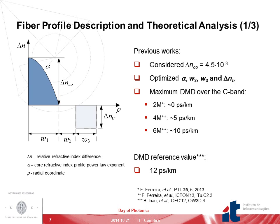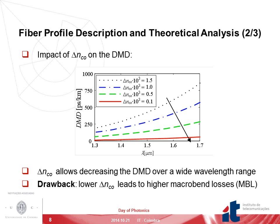The fiber profile considered is composed by a graded core and a cladding trench, as shown in the left figure. In previous works, we considered a constant value for the refractive index at the core center and optimized the remaining parameters, obtaining an optimum DMD of 10 picoseconds per kilometer for six modes. However, this value is already close to the DMD required for 2,000 kilometers of multimode transmission at 100 gigabits per second, which is 12 picoseconds per kilometer. Therefore, in this study we will consider the optimization of the ΔNCO parameter.